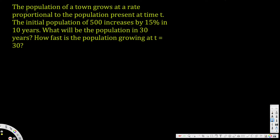This problem is asking: the population of a town grows at a rate proportional to the population present at time t. The initial population of 500 increases by 15% in 10 years. What will be the population in 30 years? How fast is the population growing at t = 30?